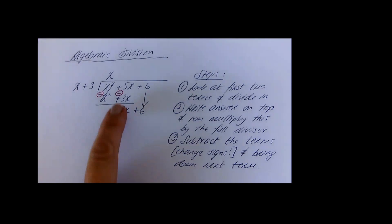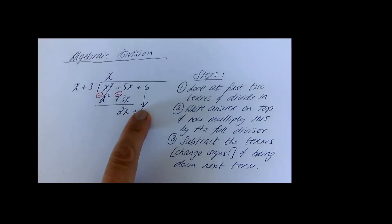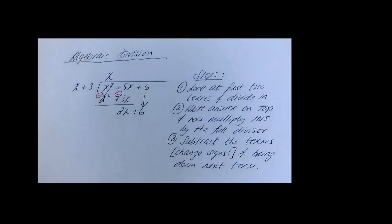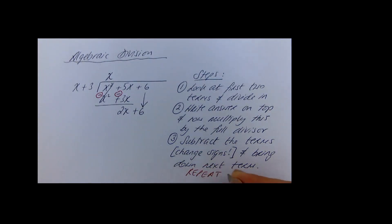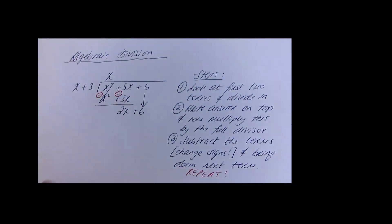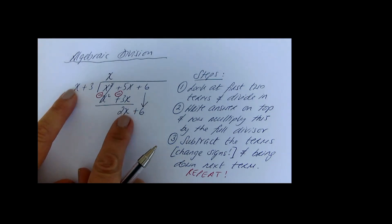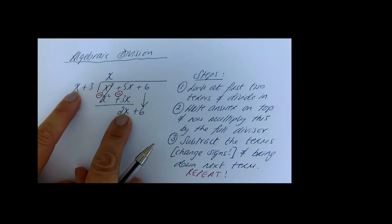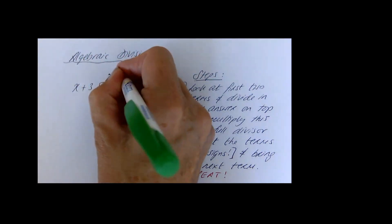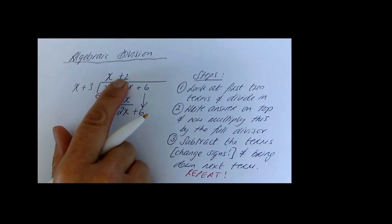Step three is to subtract and bring down the next term, then repeat the process. Look at the first term of the divisor and the first term of what's left: x divided into 2x — what would you multiply by x to get 2x? The answer is 2. Put your answer on top.